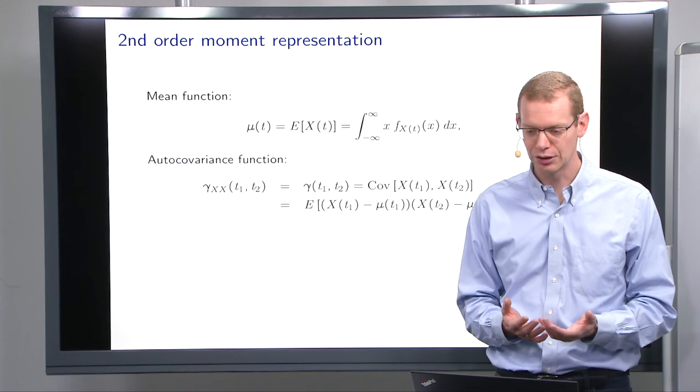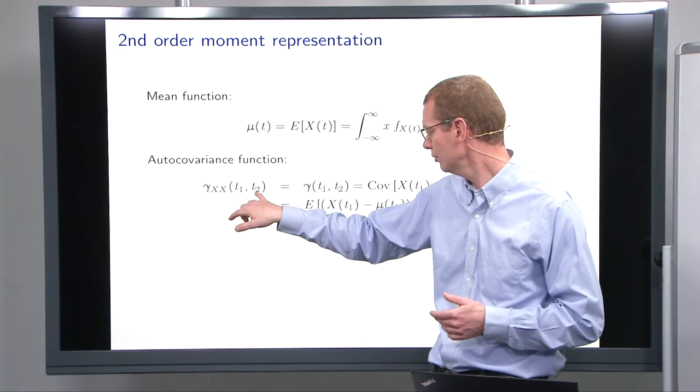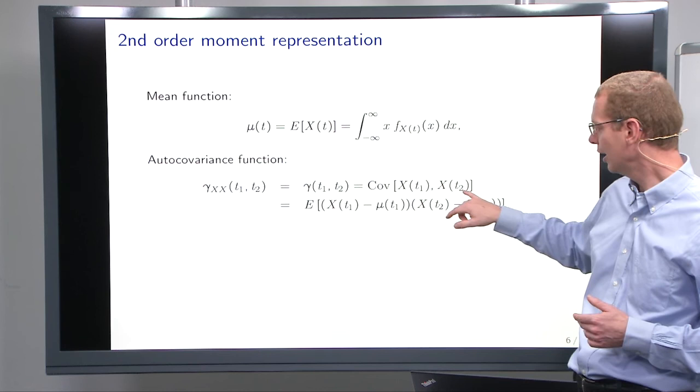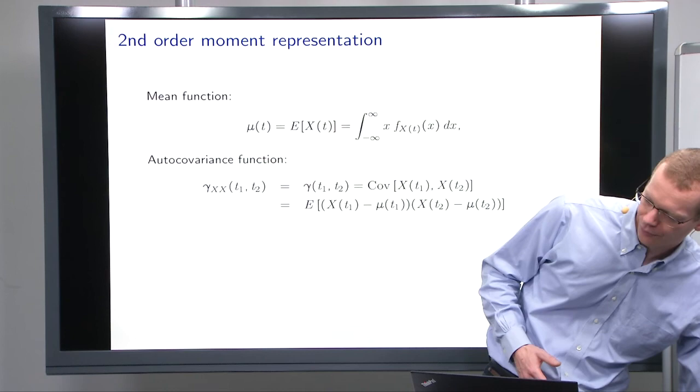And for the autocovariance, then we have two different time points. We're looking at how is the covariance between time 1 and time 2. Well, that is the covariance between the random variable at time 1 and the random variable at time t2. And the equations there are exactly the same as what we've done previously.